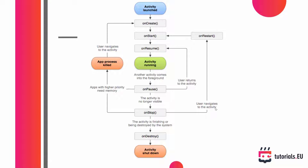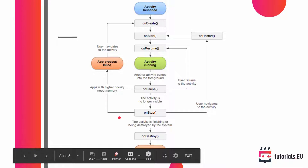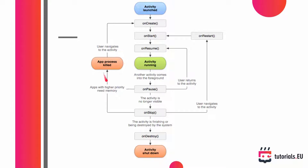If onStop has been called and the user navigates back to the activity, then onRestart will be called, then onStart again, then onResume, and your activity will be running. Once onStop is called, the alternative is that the app process is fully killed — for example, apps with higher priority need memory. So if your application is running in the background and other higher-priority applications are opened, your process is killed, and when returning, the activity needs to go through onCreate, onStart, and onResume once again.